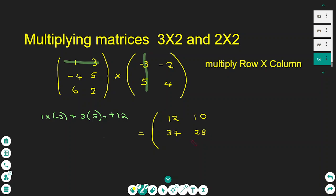And I go to the third row and I do 6 times negative 3 plus 2 times 5. This gives me the number negative 8.